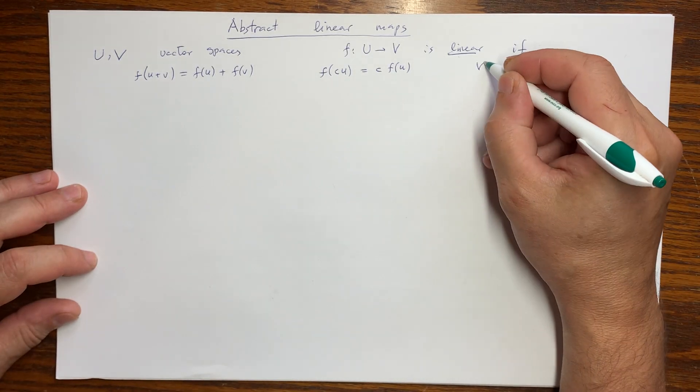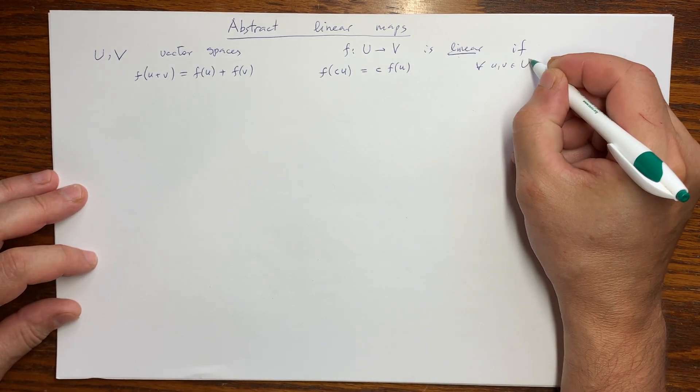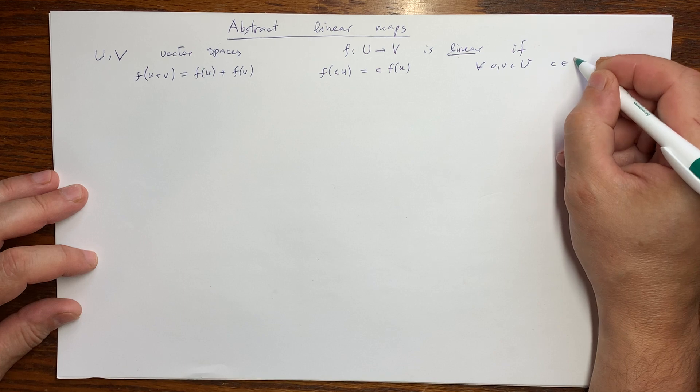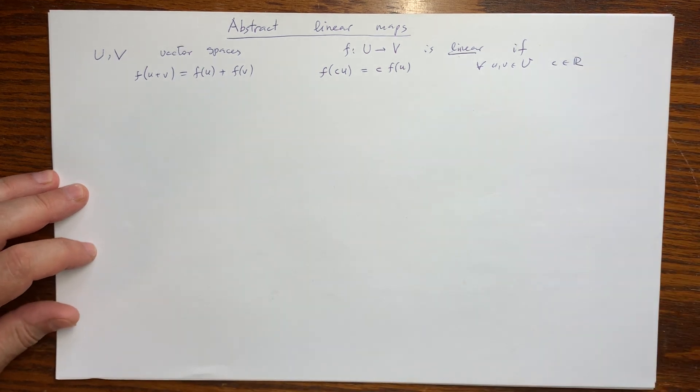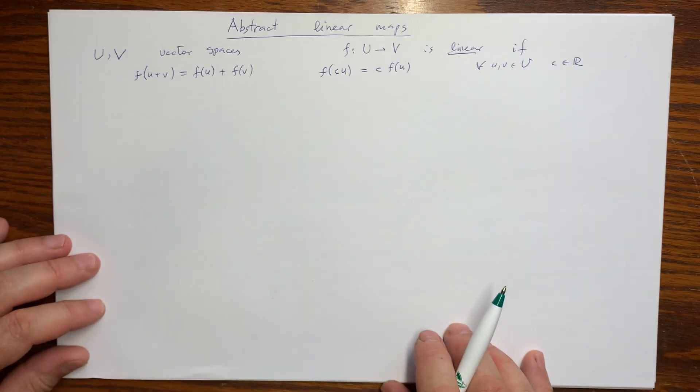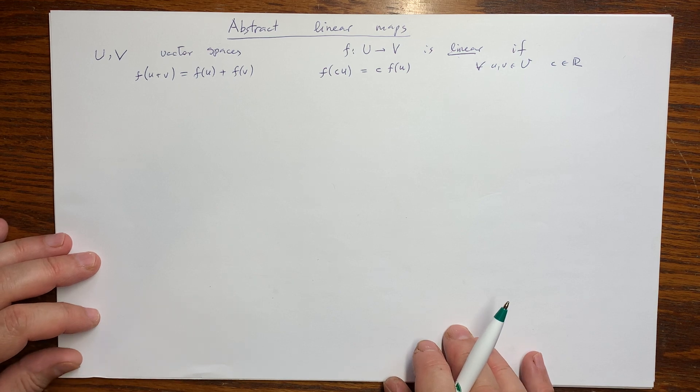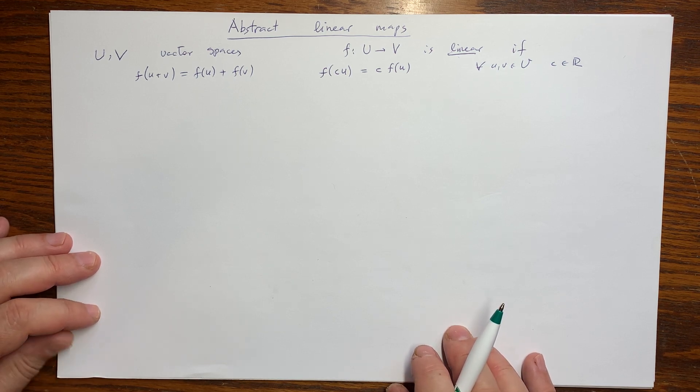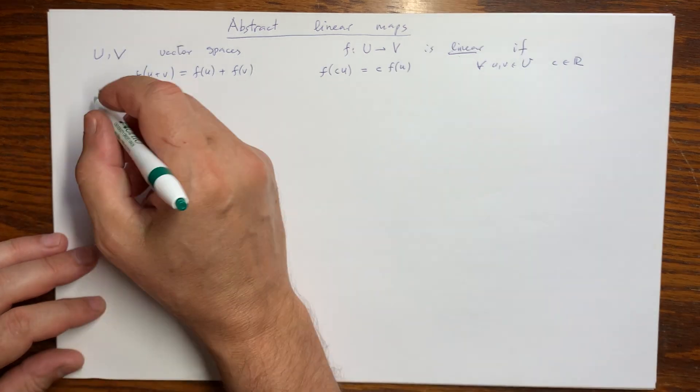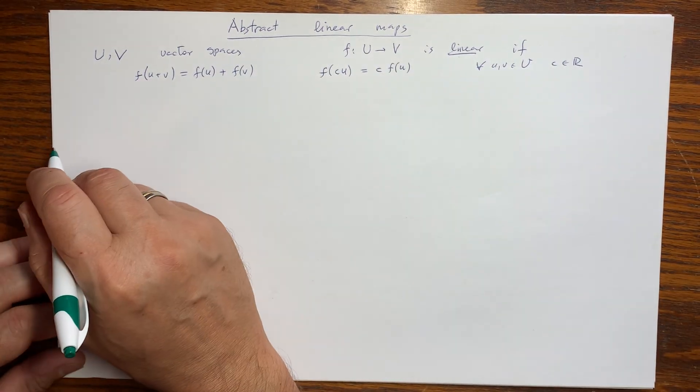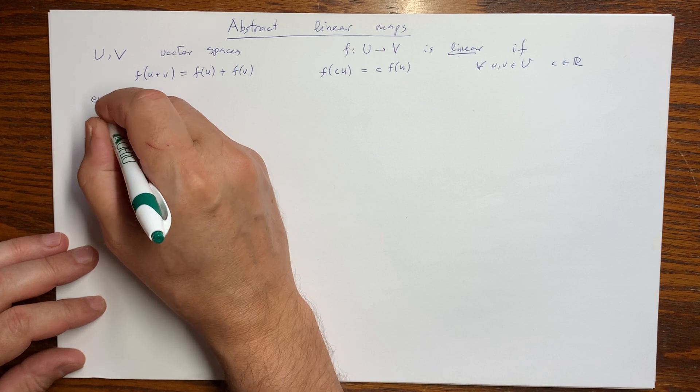So that is for all u and v in U and all the numbers. I'm using real numbers as scalars, but as was mentioned before, any field will give a consistent story. Well, that is it for the abstraction. The rest is just how we use it.